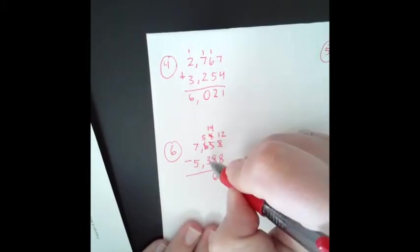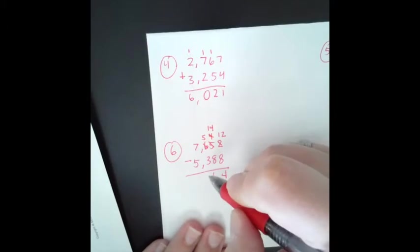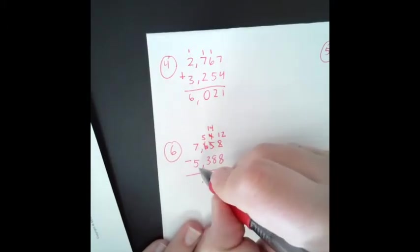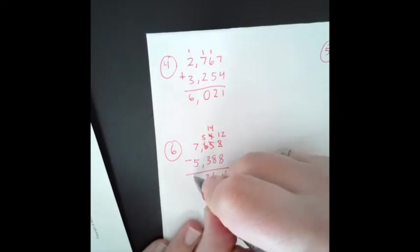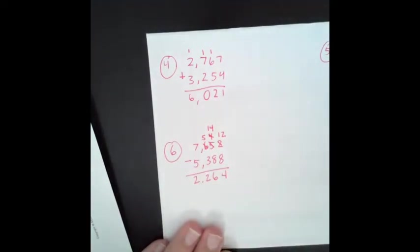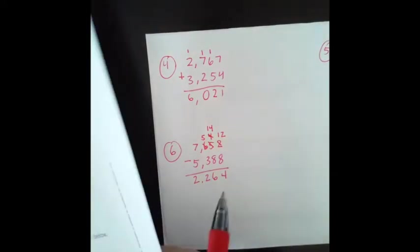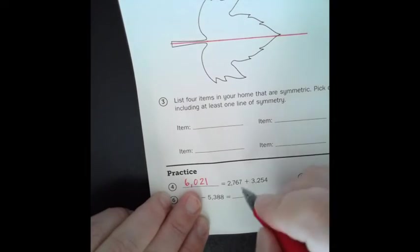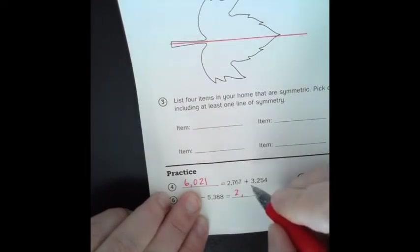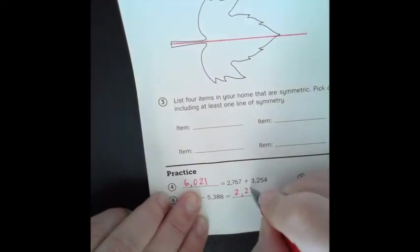5 take away 3. We are able to do that. And that's 2. 7 take away 5 is also 2. So our answer is 2,264. Go ahead and transfer my answer. 2,264.